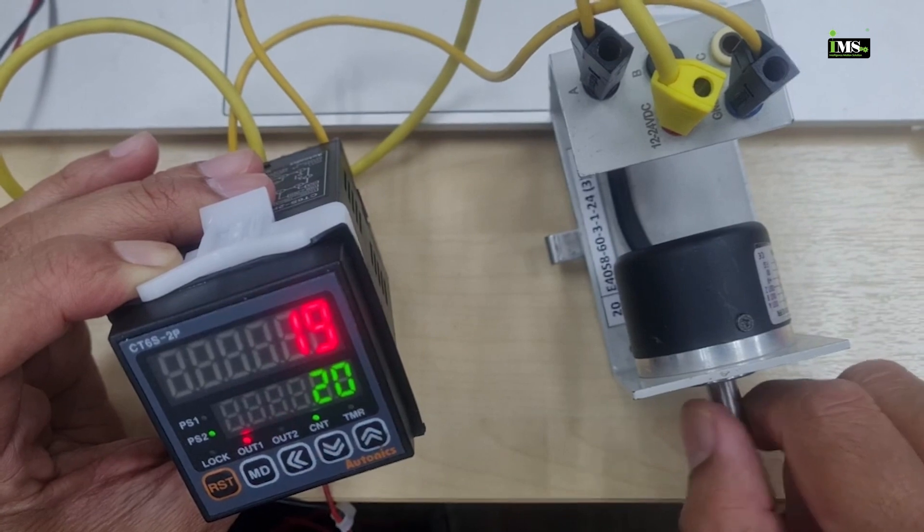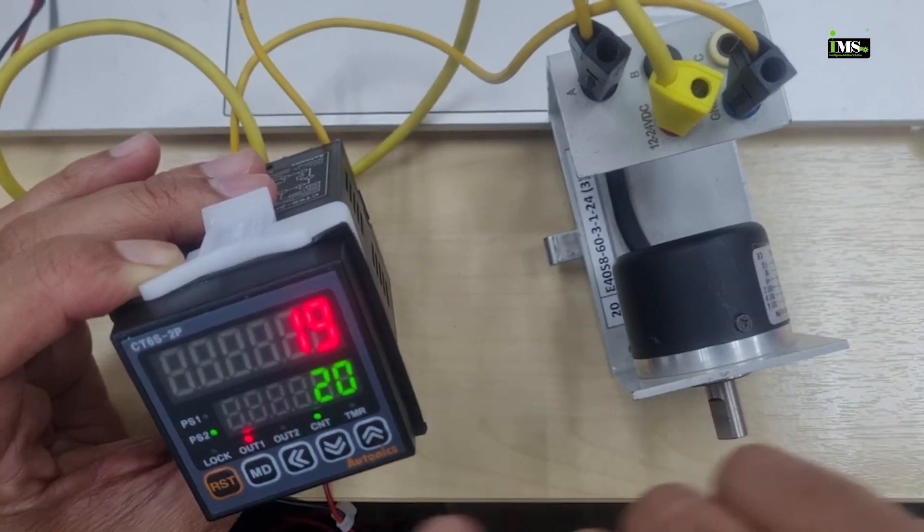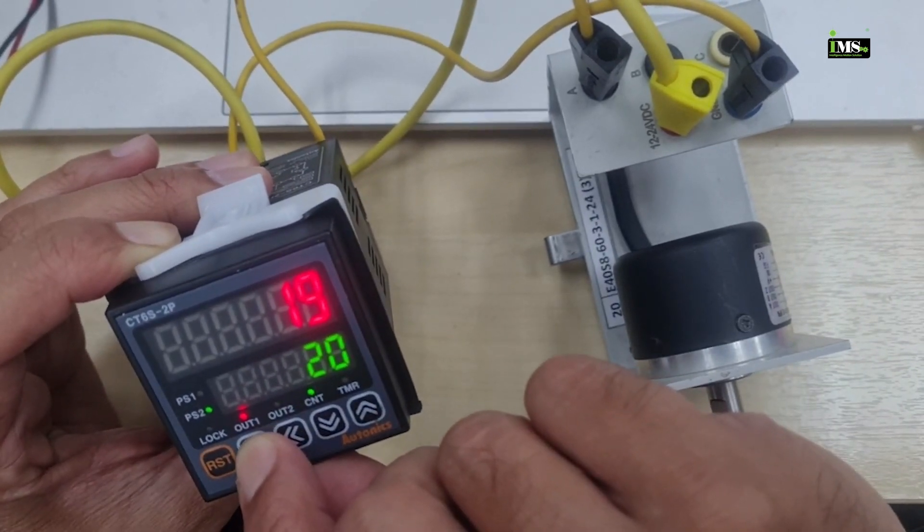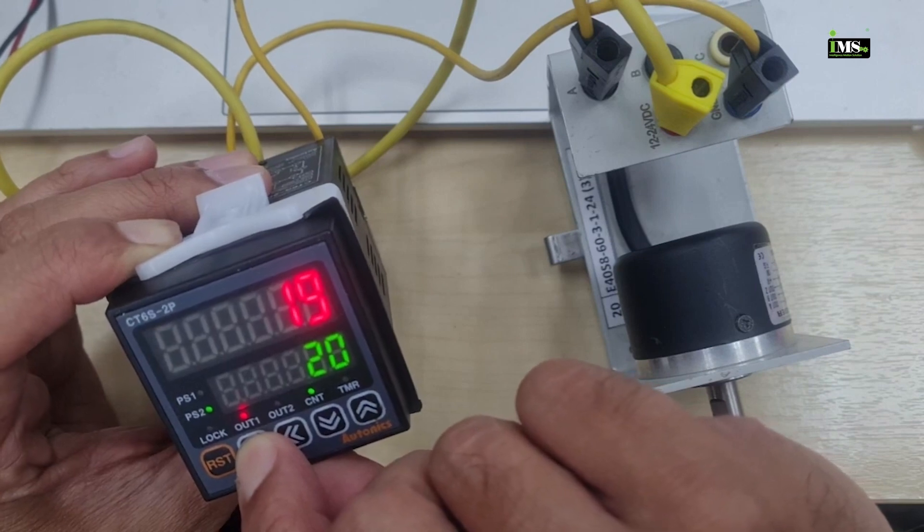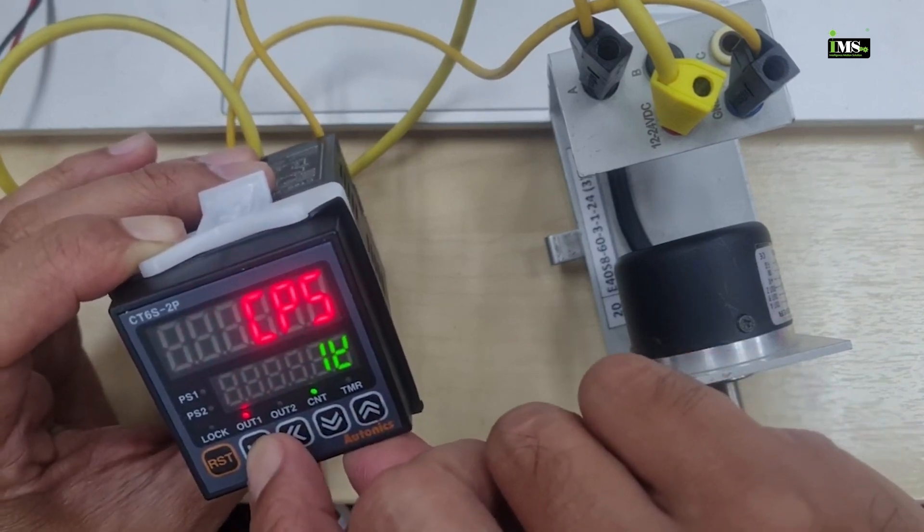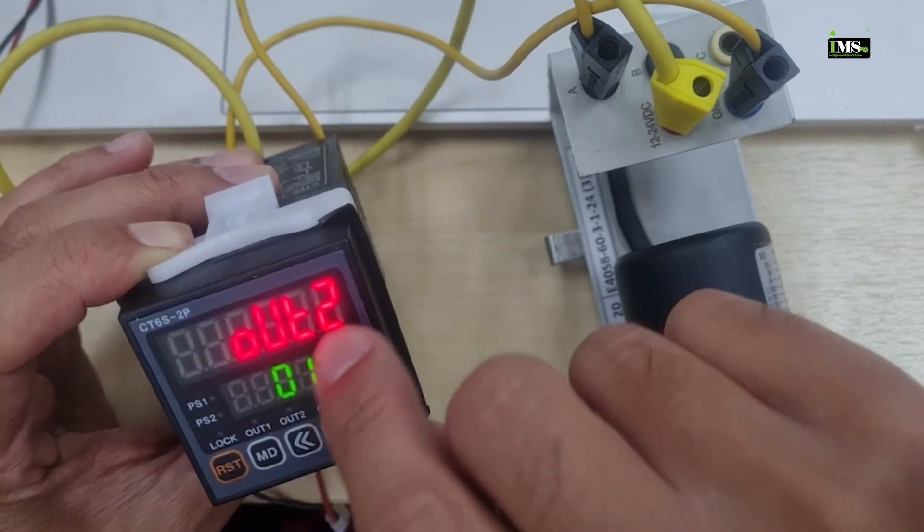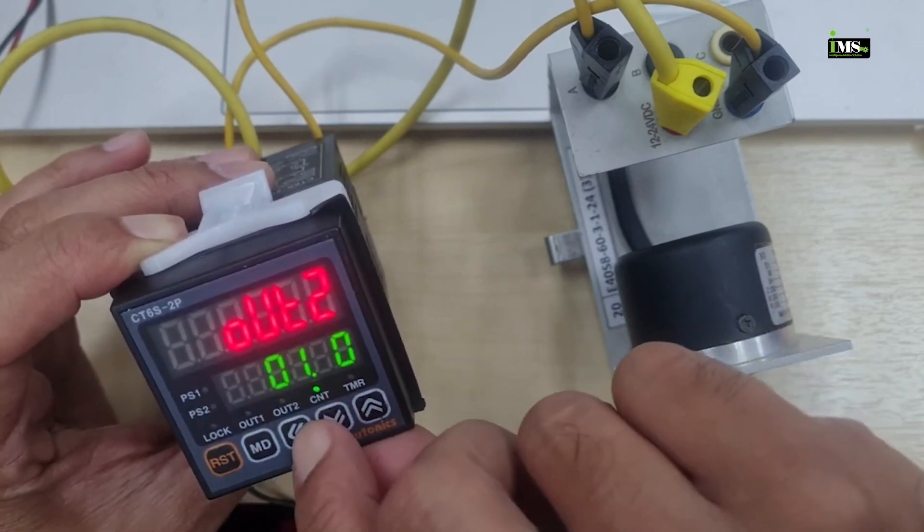Okay, this one will auto reset function. Check again output time setting. I select a fast response, both 0.1 second.